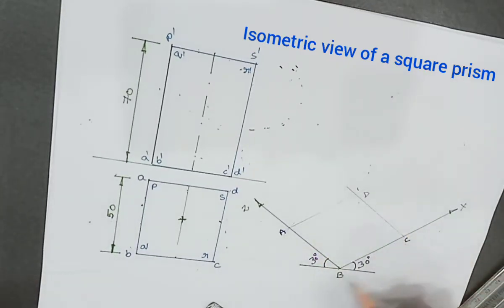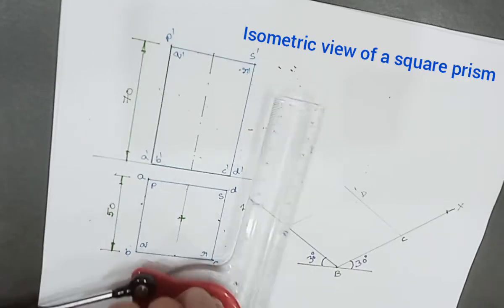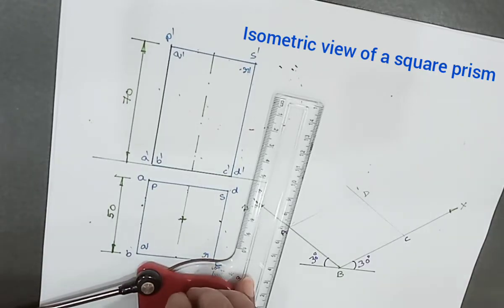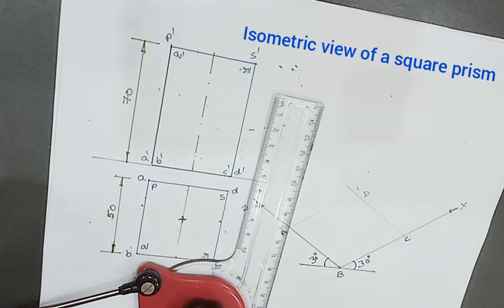CD is parallel to BC, AD is parallel to AB. Name this point as D. After drawing the top view of the square prism, we have to add the third dimension. The method which we are using is called box method. So here the square has two dimensions, then with the given axis height passing through four different points of the square, draw vertical lines.